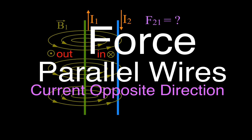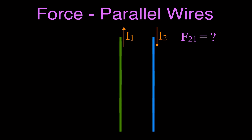In today's video, we are going to be determining the force — the magnitude and the direction of the force — on parallel wires that have currents flowing in the opposite direction. In the first part of the video we'll determine the direction of the force, and then at the end we'll do a problem where we calculate the magnitude of the force. First, we're going to determine the force on wire two from wire one.